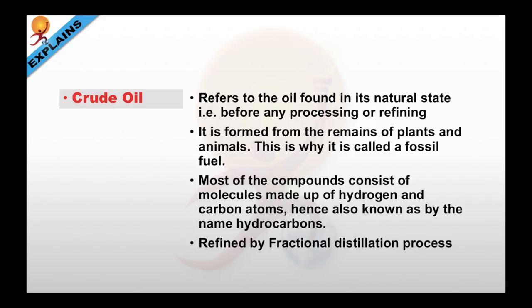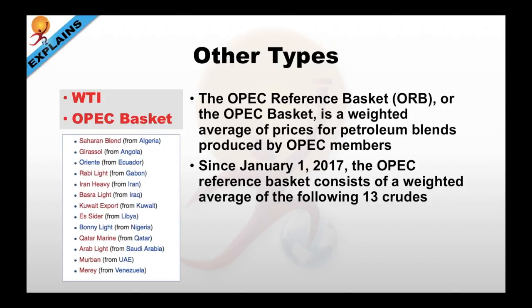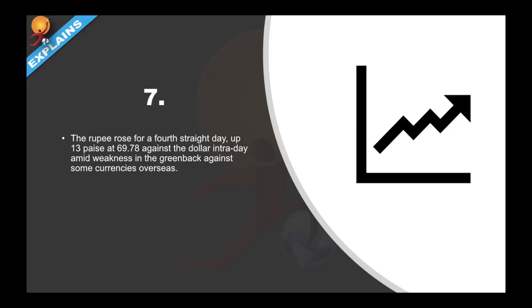Crude oil refers to oil found in its natural state — before any processing or refining. It is formed from the remains of plants and animals, which is why it is called fossil fuel. Most compounds consist of molecules made up of hydrogen and carbon atoms, hence also known as hydrocarbons, and it is refined by the fractional distillation process. Other major types include WTI and the OPEC basket. WTI or West Texas Intermediate is an extremely high-quality crude oil valued because more and better gasoline can be refined from a single barrel. The OPEC Reference Basket or ORB is a weighted average of prices of petroleum blends produced by OPEC members, consisting of 13 crude oils from different countries since January 1, 2017.